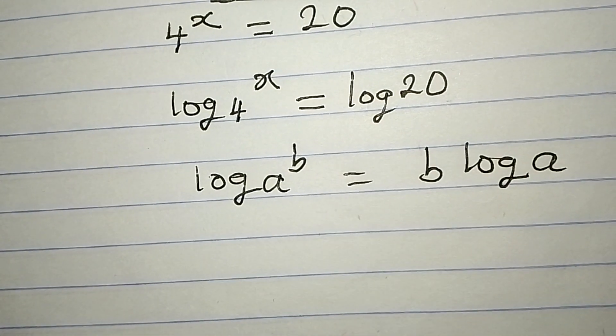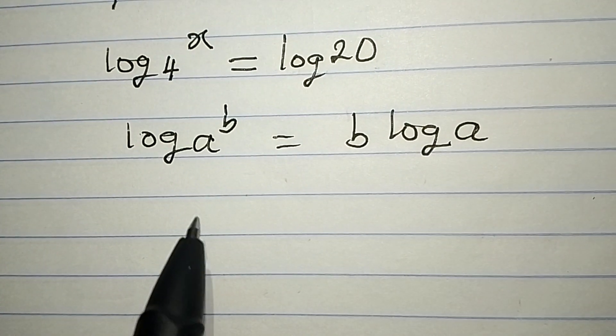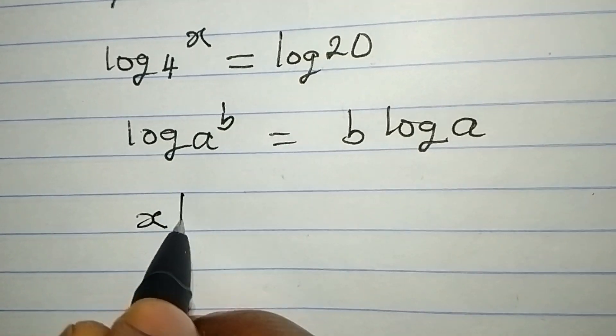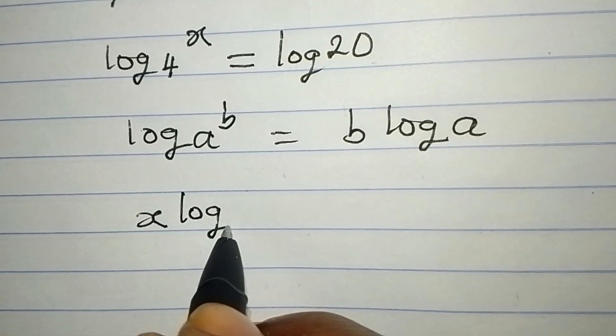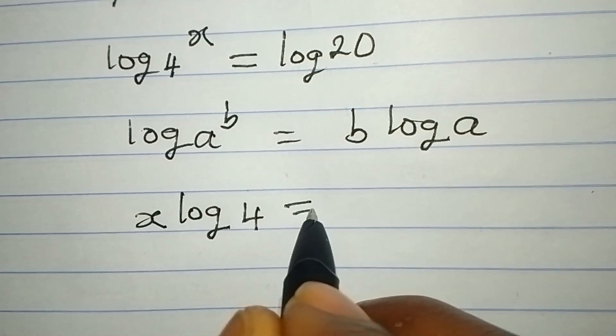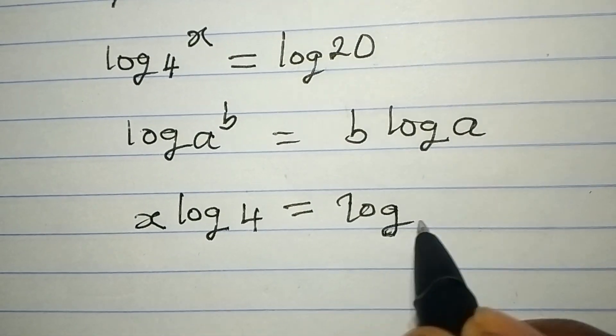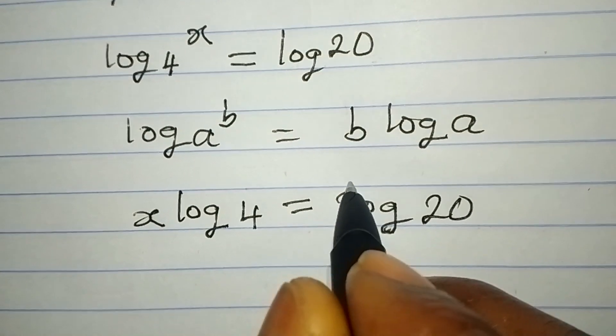If that is the case, then this x here can go behind. So we have x log 4 being equal to log 20.